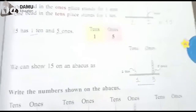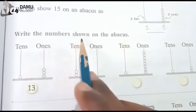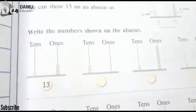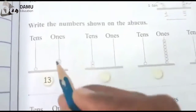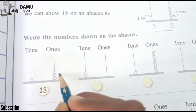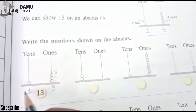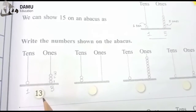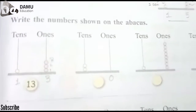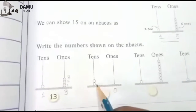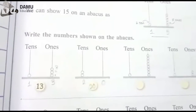Now, write the numbers shown on the abacus. The first number given is 13. Three beads are in the ones place — so we write three. One bead is in the tens place — so combined, that is 13. The next one has no beads in the ones place, so we write zero, and two beads in the tens place, so it is 20.